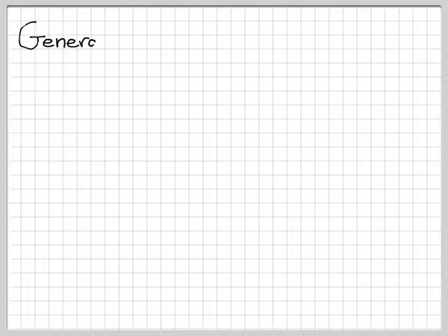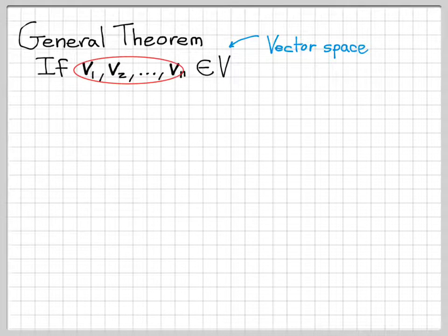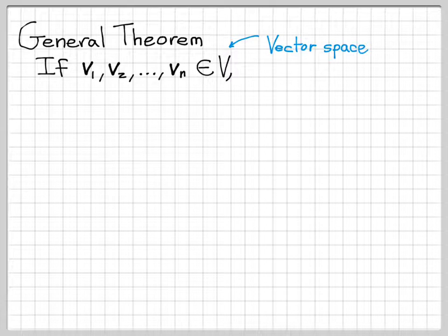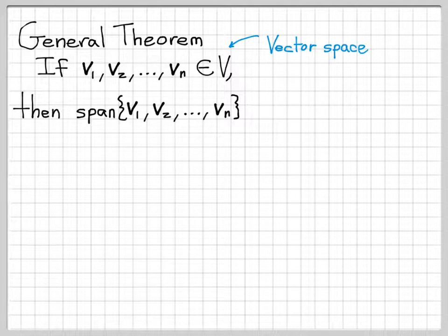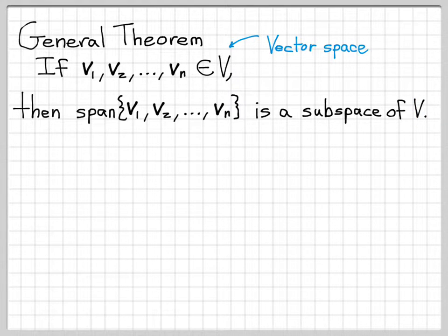What we're doing here is applying a very general theorem. The theorem says: if you're working with a vector space V and you choose some arbitrary elements from it — vectors v1, v2, up to vn — then the span of those vectors is by definition a subspace of V. In our problem, V was R³. We found two vectors x and y in R³, and we were able to write U as the span of x and y. So by this general theorem, U is a subspace of R³.